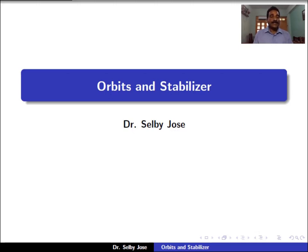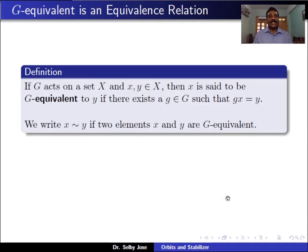Let us see how the elements of X are related. If G acts on a set X, and if you have two elements in X, say x and y, then x is said to be related to y if there exists a g in G such that g*x equals y — here g*x means star of g comma x, as mentioned in the last session. So x and y are G-equivalent if there exists a g in the group G such that g*x equals y. We denote it with a tilde: x is related to y means x tilde y.